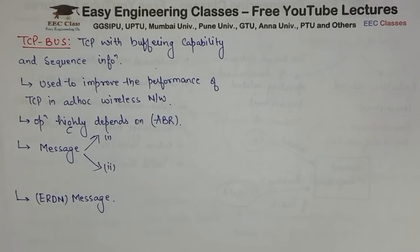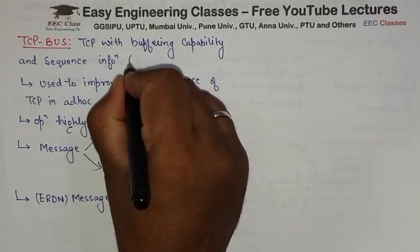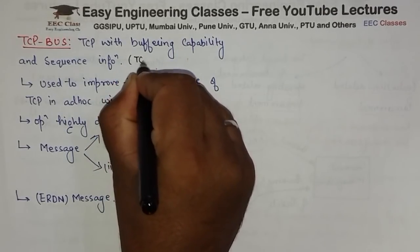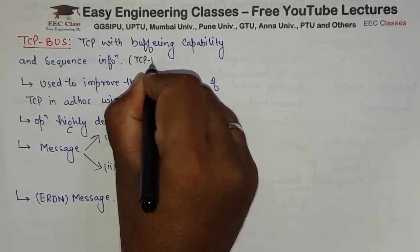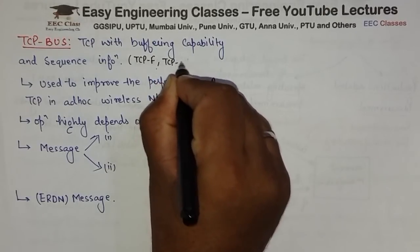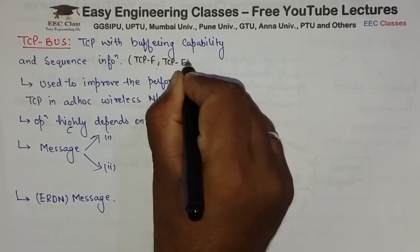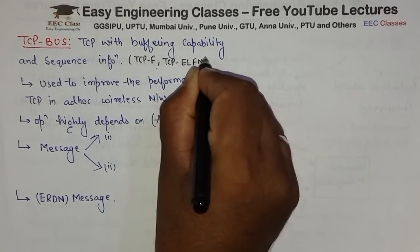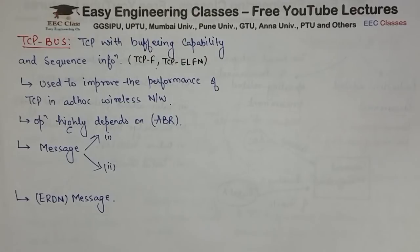Now it is very much similar to TCP F and TCP LFN — bilkul unhi ki tara hi kaam karta hai. Path break jab koi ek node detect karti hai toh woh sender ko notify karti hai. But iske andar kuch difference tha, and it is used to improve the performance of TCP in ad hoc wireless network.